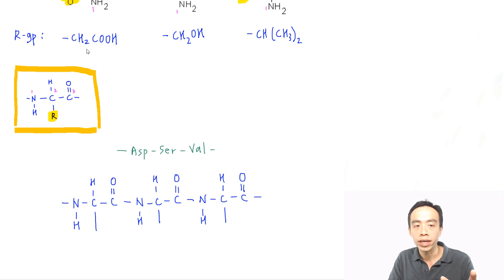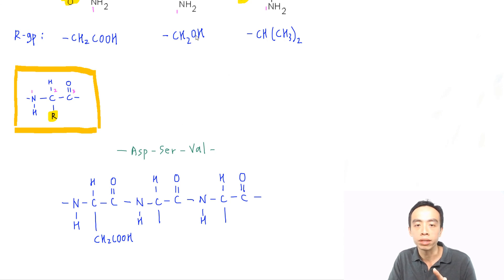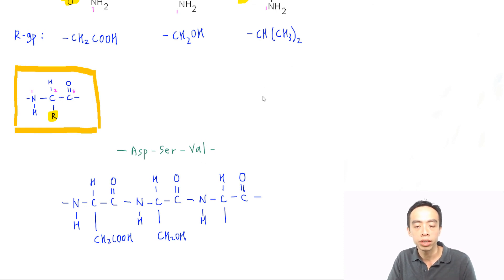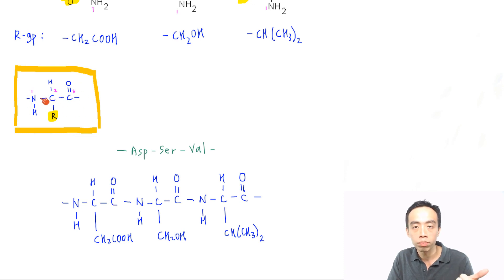So the first R group is ASP: CH2-COOH. The second R group is SER: CH2-OH. The third is VAL: CH(CH3)2. I can very easily draw this primary structure sequence by duplicating the format — position 1 is an amine group, position 2 is a carbon with an R group, position 3 is an acid group — and then filling in the respective R groups.